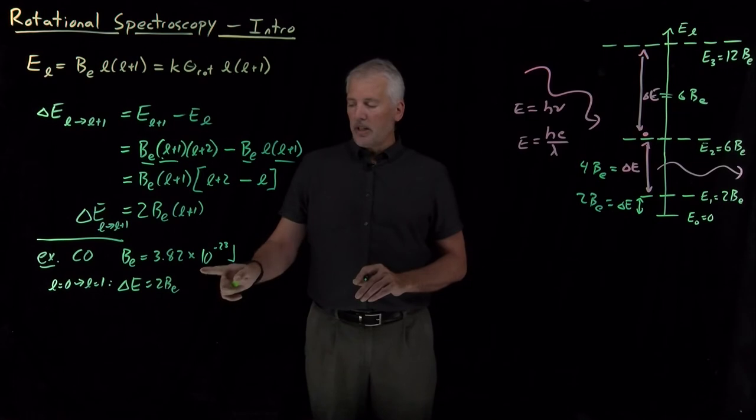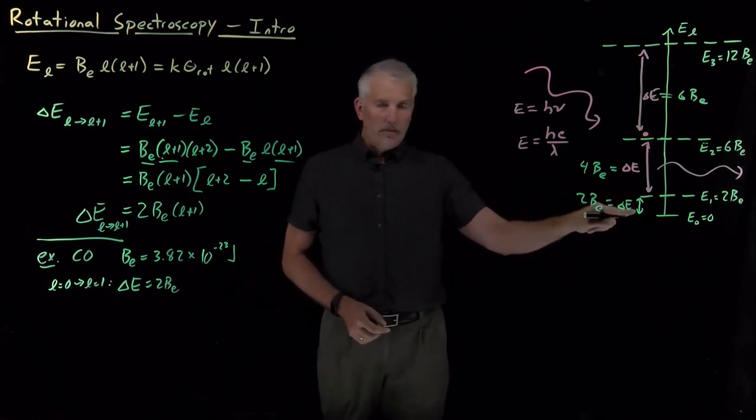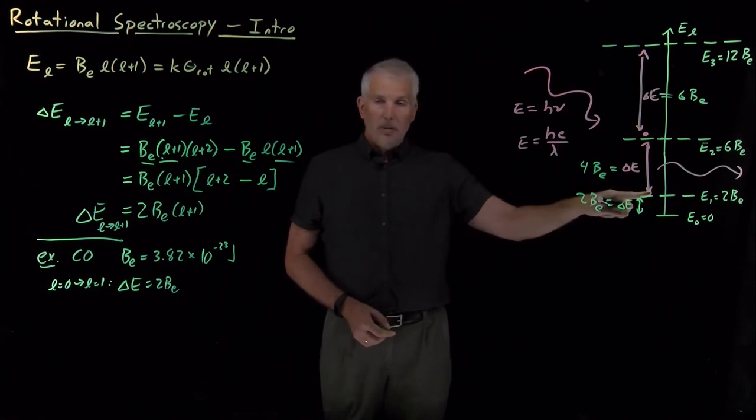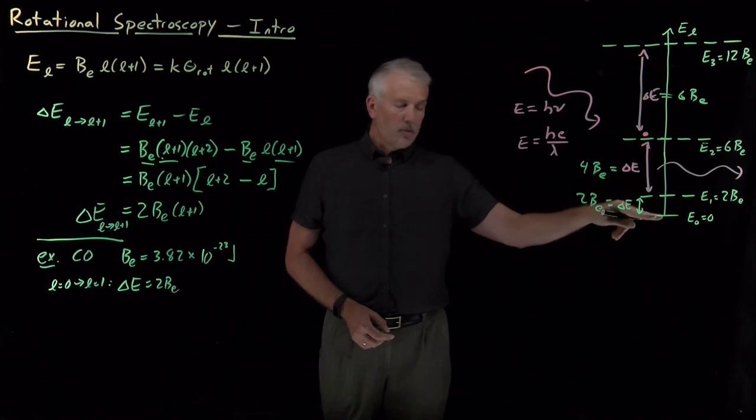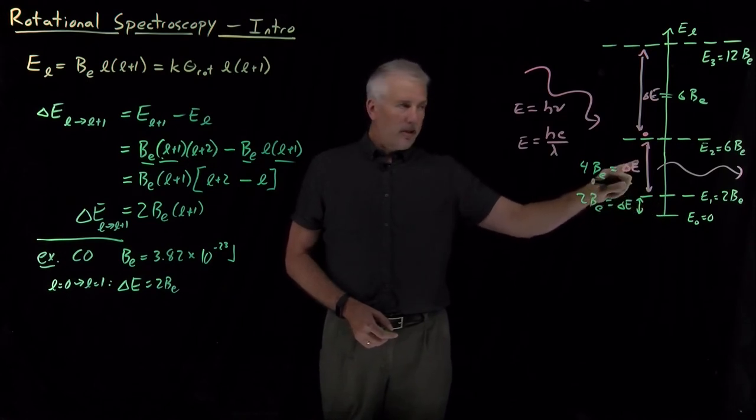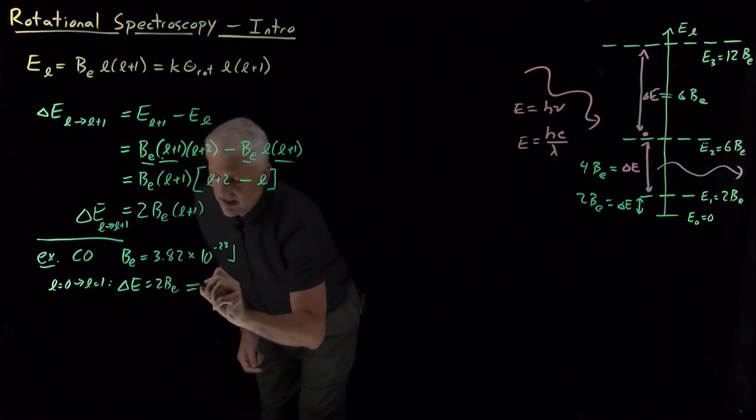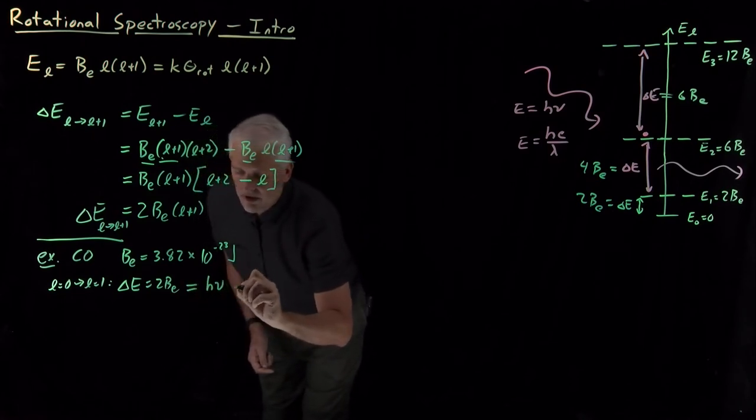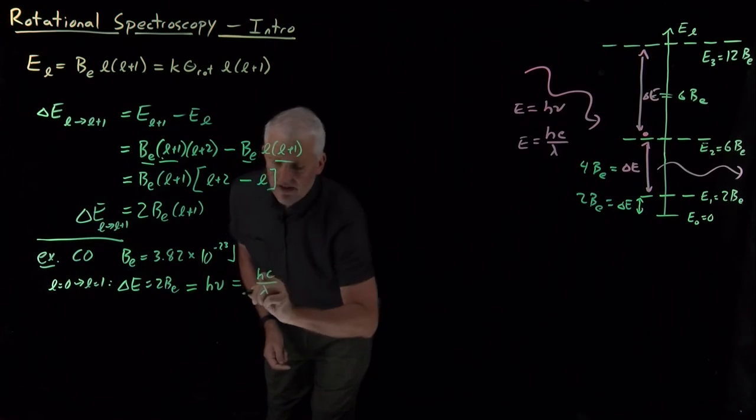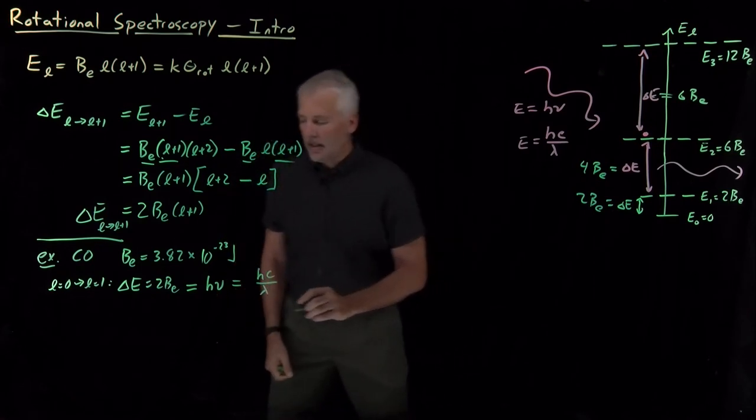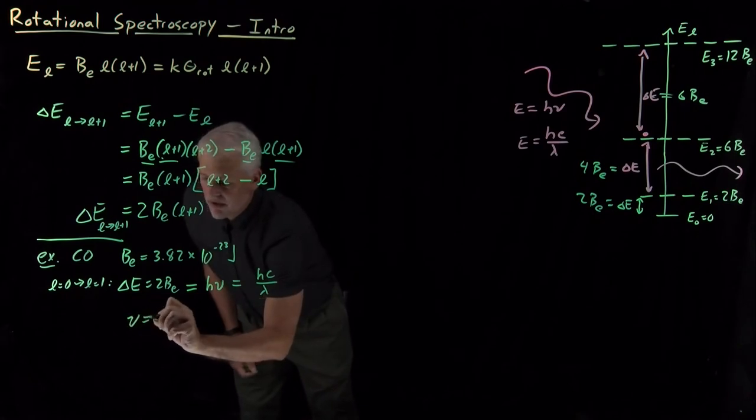More interesting than knowing how many joules the energy level difference is, is knowing something about the light required either to induce that transition upwards or the light that's emitted when a molecule falls down from the L equals one to the L equals zero level and a photon gets emitted. So if that energy difference is equal to either h times nu or hc over lambda, we can ask ourselves what would that frequency be?